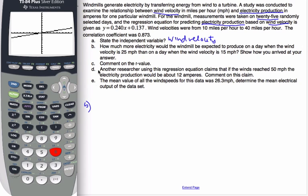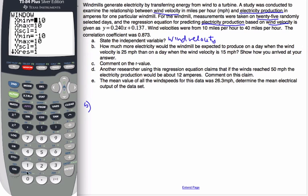I want to find 15 and 25 velocity. I'm going to make my window. I don't care about negative wind velocities. I'm going to go out to up to 40. So let's go up to 40, and we'll go by 4s.